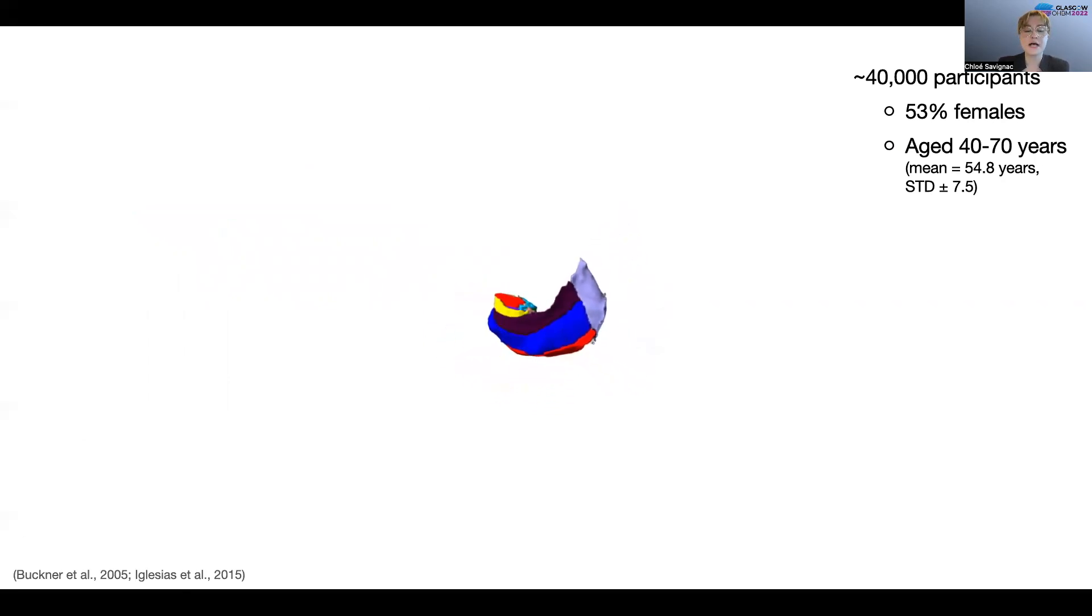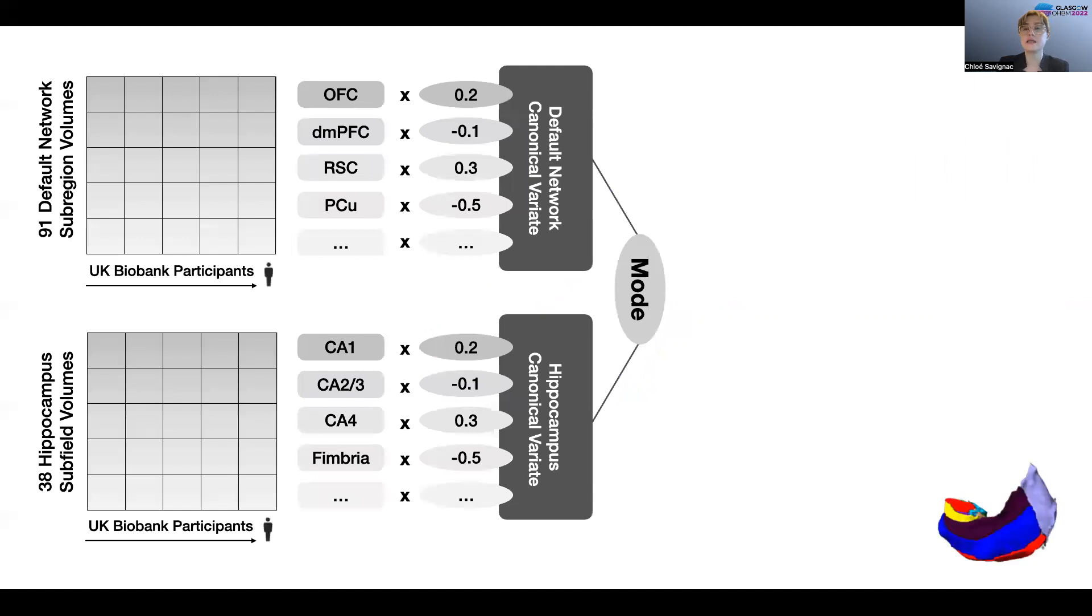At the heart of our analysis workflow, we derive dominant regimes of structural correspondence that provide insight into how structural variation amongst the finely segregated hippocampus can track structural variation amongst the finely segregated default network. We employ canonical correlation analysis, a doubly multivariate statistical technique,